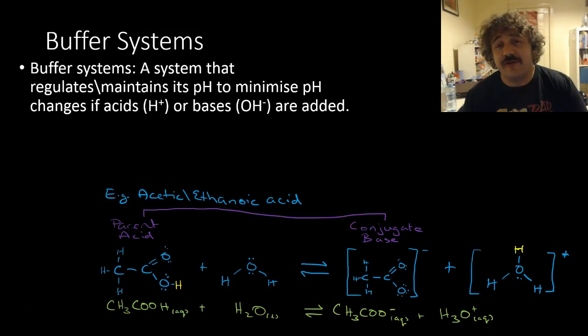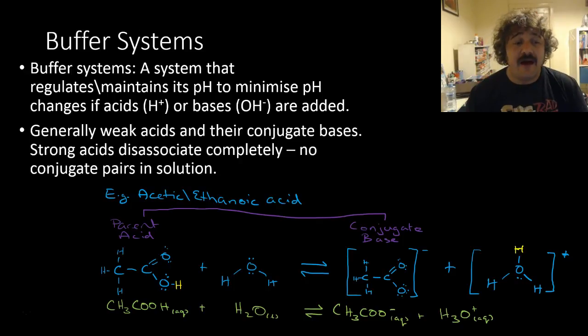If protons or hydroxide ions are added, it will minimize any changes to the system. We generally use weak acids and their conjugate bases. Strong acids disassociate completely, and what this means is there are no conjugate pairs in solution.